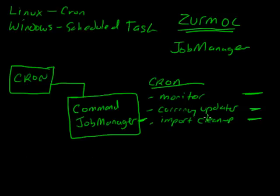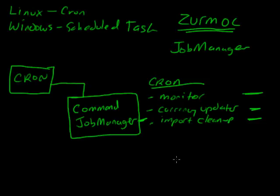You might be wondering why I set this up so that instead of having just one cron or one scheduled task that calls one command and the system manages the frequency, I decided to utilize what is natively in Linux — the cron tab — or in Windows the scheduled task, which is designed for doing what it does really well. There's no reason to reinvent the wheel. Zermo should focus on what it does best, which is CRM, and utilize the native tools in the environment.